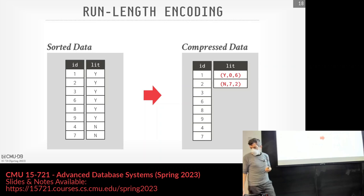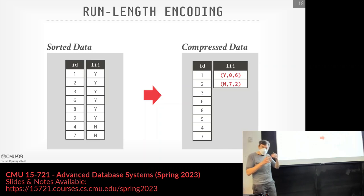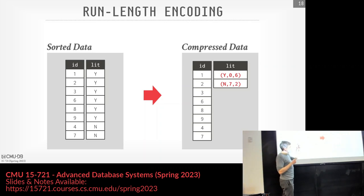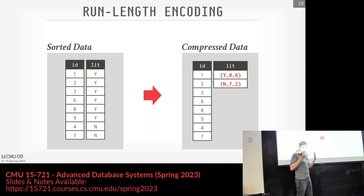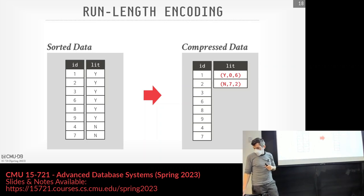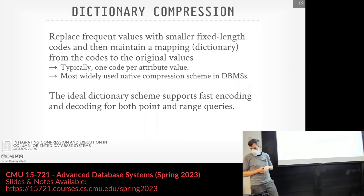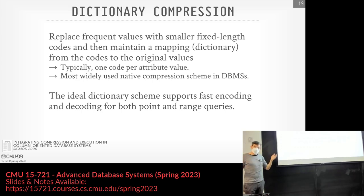RLE appears in a bunch of different cases combined with other schemes. Very few systems use RLE standalone on a single column — Vertica is probably the most aggressive about this because they want to pre-sort columns ahead of time. We'll see RLE appear in dictionary coding and other things. I'm showing RLE first because we can then apply it as necessary.